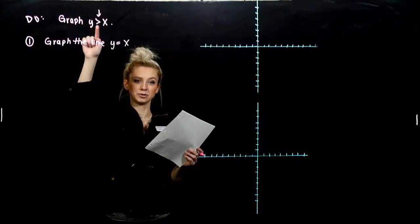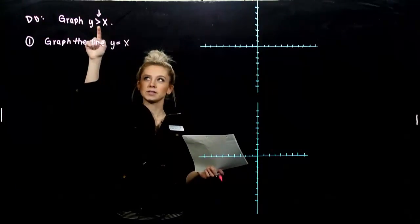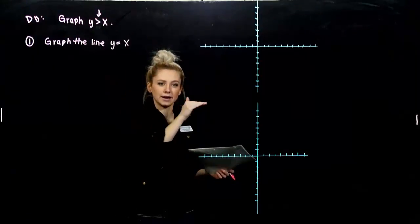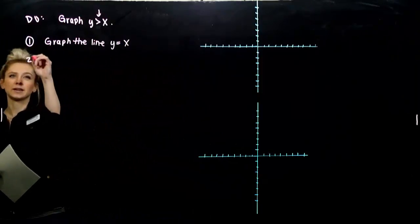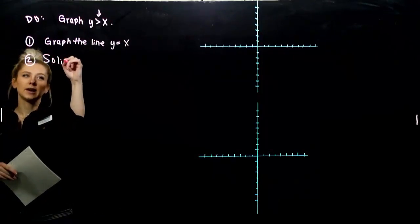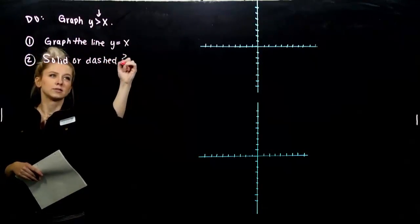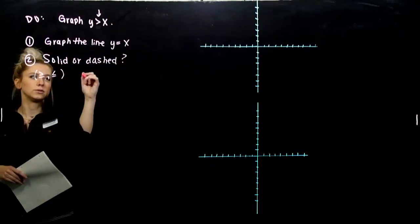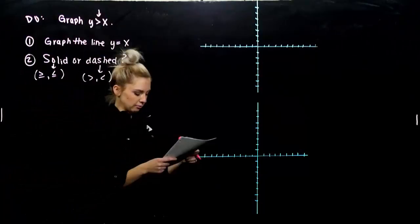And how we graph that line depends on what inequality we're dealing with. So is it going to be a solid or a dashed line? Meaning, can I include the boundary? Or do I have to exclude the boundary? So in this case, we don't have the option to have it exactly equal to. So we would have to have a dashed line because it can only be greater than. So we have to determine, second, if it's going to be solid or dashed. So solid is if we have greater than or equal to, less than or equal to. Dashed is if we have just greater than or less than. So we can't include the boundary.